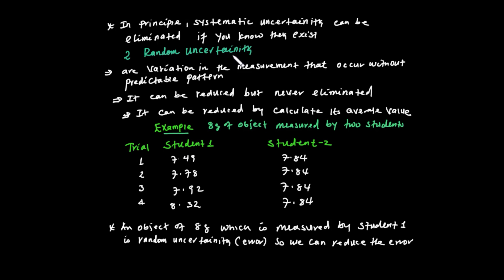Random uncertainty creates variation in measurements that occur without predictable patterns — sometimes the measurement is too large, sometimes too small, without consistency.